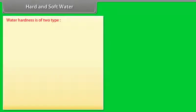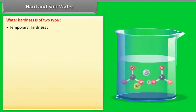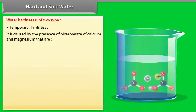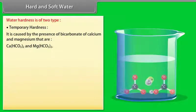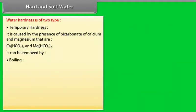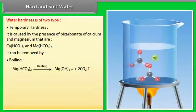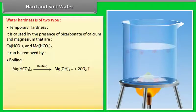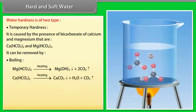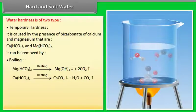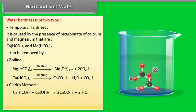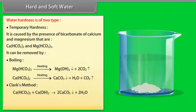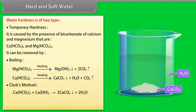Water hardness is of two types. Temporary hardness is caused by the presence of bicarbonate of calcium and magnesium. It can be removed by boiling: soluble bicarbonates change to carbonates which are insoluble and get precipitated. Clark's method: When a calculated quantity of lime is put in, it causes precipitation of calcium carbonate.